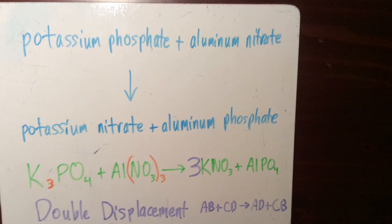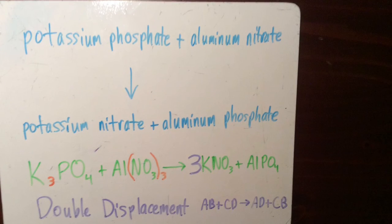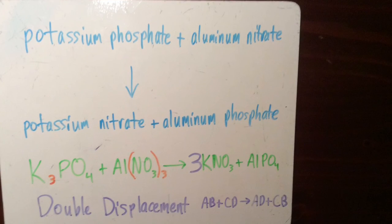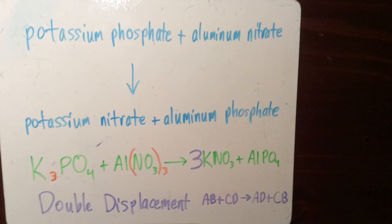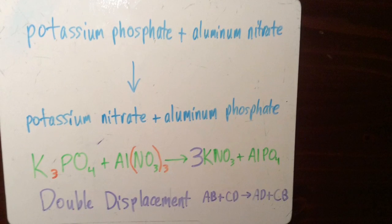So, since this chemical equation matches the AB plus CD yields AD plus CB formula, that means the chemical equation is classified as double displacement.